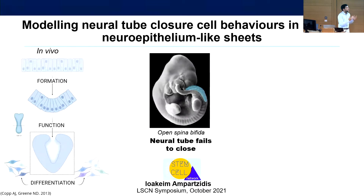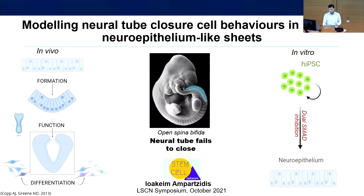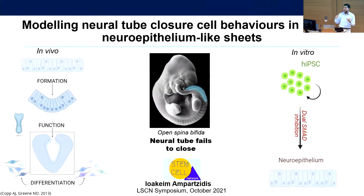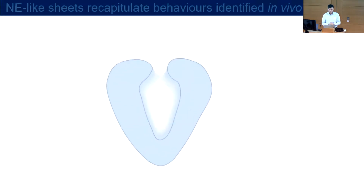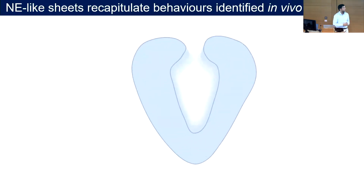This is understudied in human models. We have studied differentiation using human-induced pluripotent stem cells with an inhibition protocol in order to generate a neuroepithelium. We want to compare that with the in vivo reference, which is the neural tube itself. But in order to understand that, we first need to understand what cell behaviors are present in the neuroepithelium.